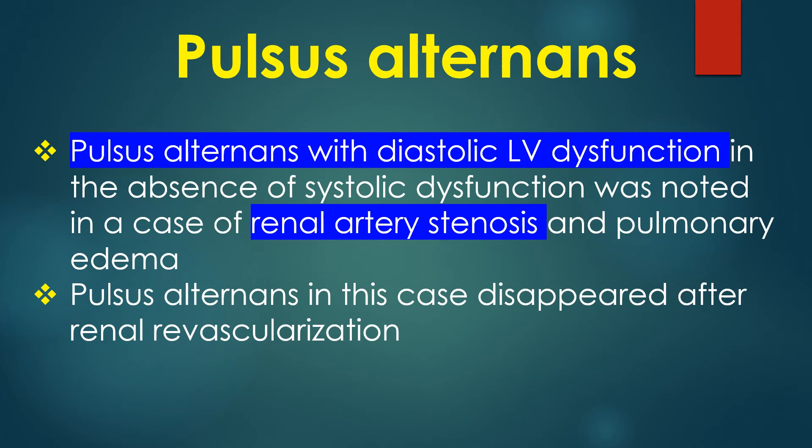Pulsus alternans with diastolic left ventricular dysfunction in the absence of systolic dysfunction was noted in a case of renal artery stenosis and pulmonary edema. The pulsus alternans in this case disappeared after renal revascularization.